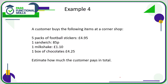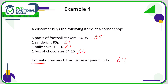This final example asks us to estimate how much the customer pays in total. We're going to do a bit of rounding — we can't use a calculator here. Five packs of football stickers, let's call that £5. A sandwich, round that up to £1. One milkshake at £1.10, round down to £1. The box of chocolates, call that £4. So 5 plus 4 is 9, plus 1 is 10, plus 1 is 11 — a pretty decent estimation.